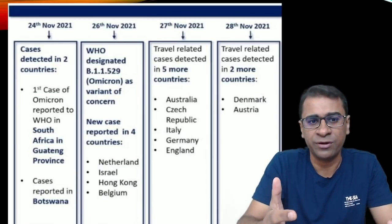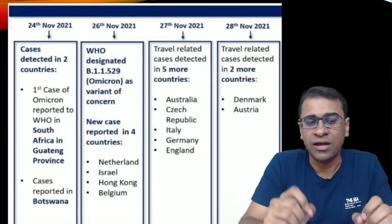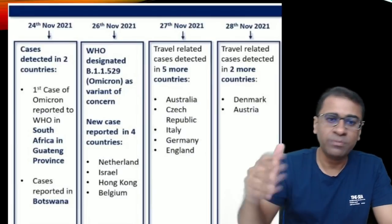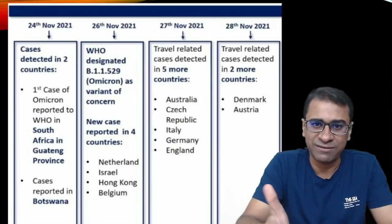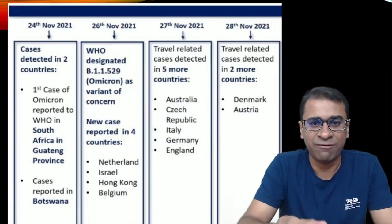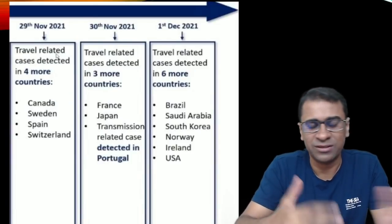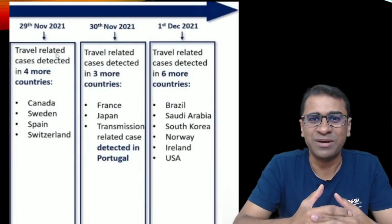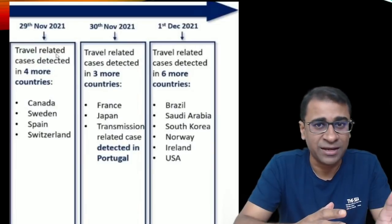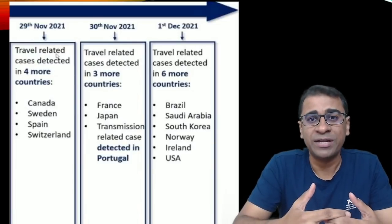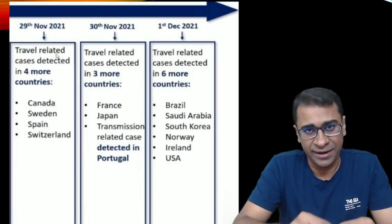On 24th of November 2021, the first case was reported in South Africa in the Gauteng province. From that came reports on 26th, 27th, 28th, 29th, and 30th of November, and on the 1st of December a case came in India also. From that first case in India, today we are at 21 cases of Omicron all over India.